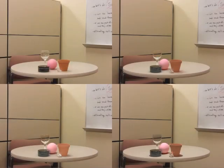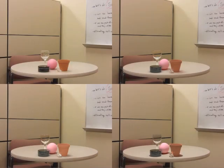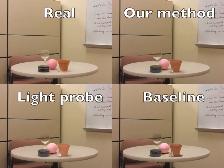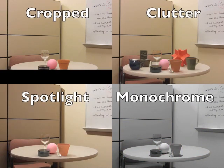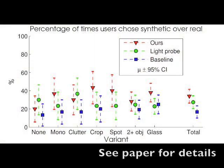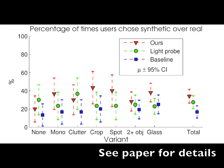We also created a user study to measure the quality of our results. Can you tell which of these are real? We tested three methods for inserting synthetic objects, including our own, against real images. We also tested four variants — see our paper for details. Our study showed that each method appears highly realistic to people, and also that our method is preferred to other state-of-the-art techniques.